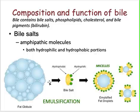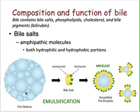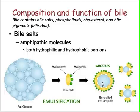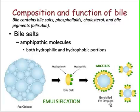When you eat a fatty meal, in order for you to be able to absorb the fat, it needs first to undergo emulsification. Your fats are emulsified by the binding of your bile salt into the fat droplet, into the fat globule. The hydrophobic portion will attach to the fat globule, and the water-loving or hydrophilic portion will remain outside. This will form an emulsified fat droplet.